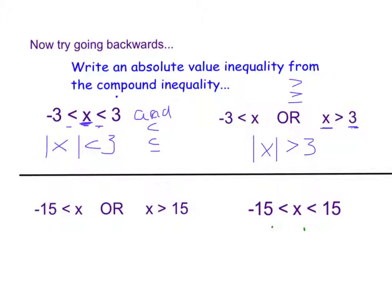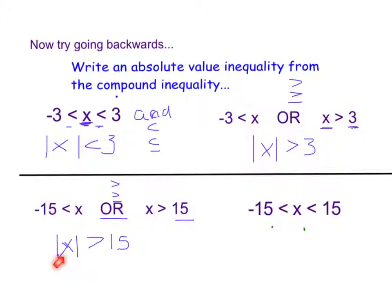Let's do two more examples. This is an or, so we know it's going to be a greater than or greater than or equal to — in this case it's a greater than. We're going to take our positive, and whatever is on the other side of the greater than is going to be what's inside our absolute value symbol. And again, all we're doing is working backwards. Now here, I know it is a less than, so it's an and. Since it's an and it's going to be a less than. So we take whatever is in the middle and put it in the absolute value symbol, and we take the less than and the positive.